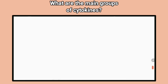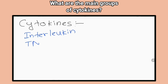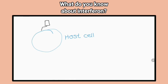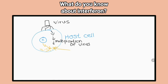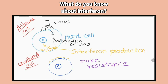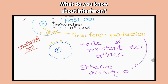What are the main groups of cytokines? Interleukins, tissue necrosis factor, colony stimulating factor, interferon. What do you know about interferons? They are secreted by virally infected cells. They prevent the spread of viral infection by making other cells resistant to that virus and other viruses. They also activate macrophages and mobilise natural killer cells.